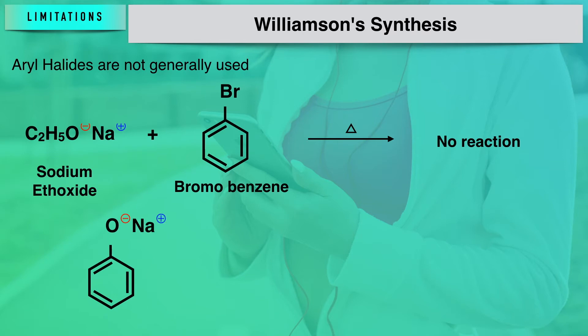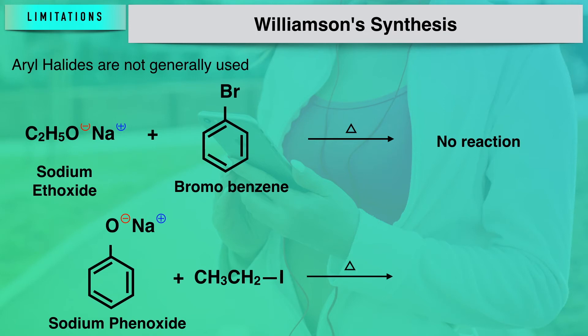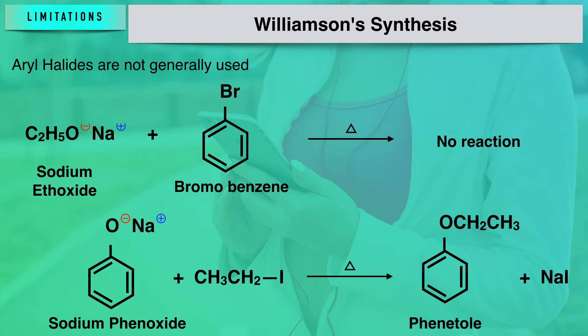However, if instead of aryl halides we take alkyl halides — for example, sodium phenoxide interacting with ethyl iodide — it results in the formation of an alkyl aryl ether, specifically phenetole. The key concept is: reaction can take place between an alkyl halide and a phenoxide ion, but reaction cannot take place between an aryl halide and an alkoxide.